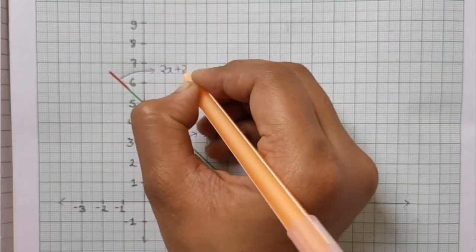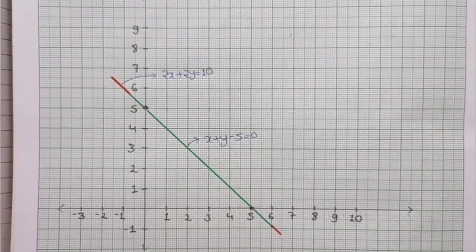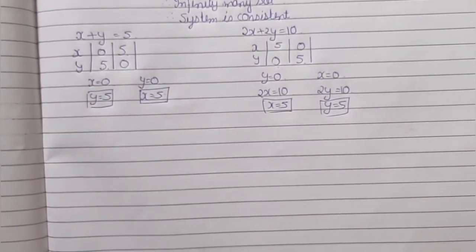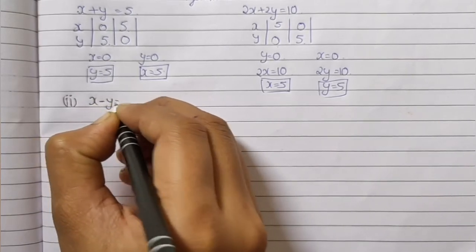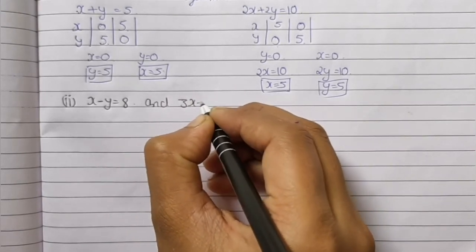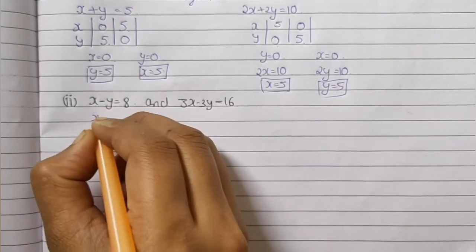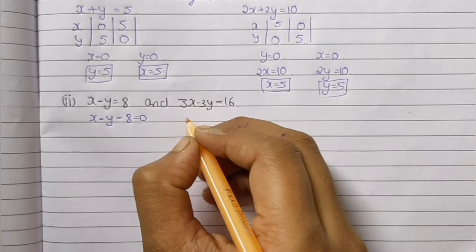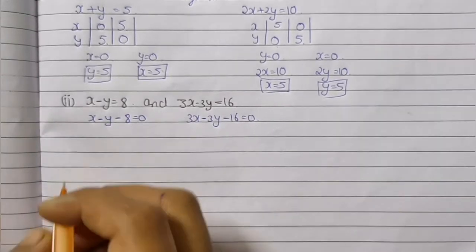For 2x plus 2y equals to 10 we get infinite many solutions. Now let's look at the second part. The second part has x minus y equals to 8 and 3x minus 3y equals to 16. Converting to standard form: x minus y minus 8 equals to 0, and 3x minus 3y minus 16 equals to 0.